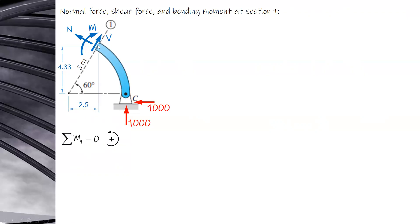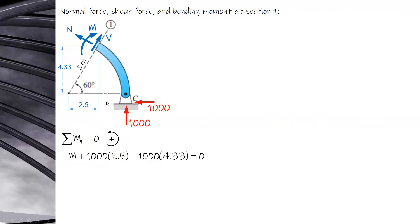For the bending moment at section 1, use counterclockwise positive convention. The equation gives: negative M plus 1,000 times 2.5 minus 1,000 times 4.33 equals zero, resulting in M equals negative 1,836 N·m.